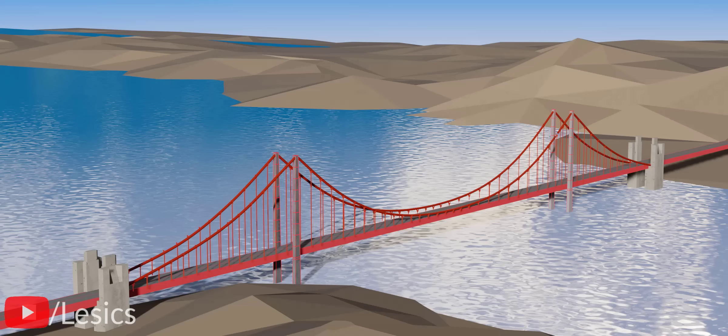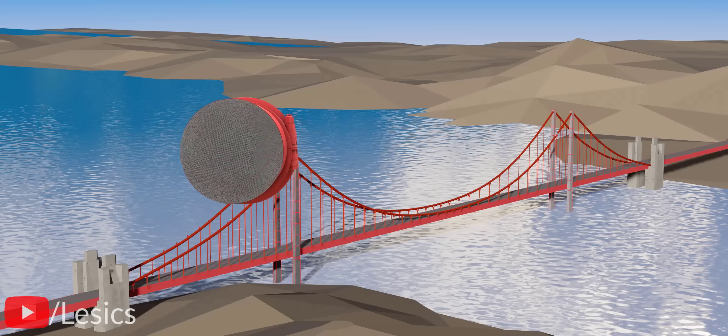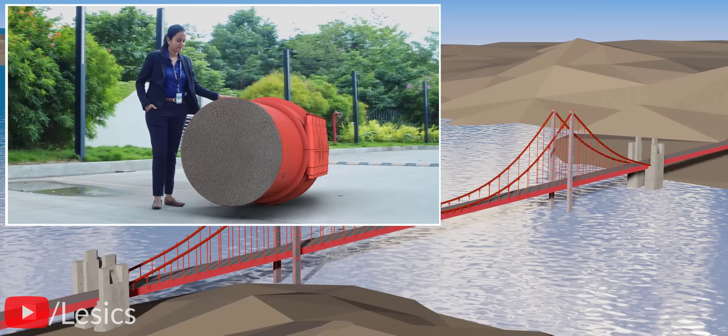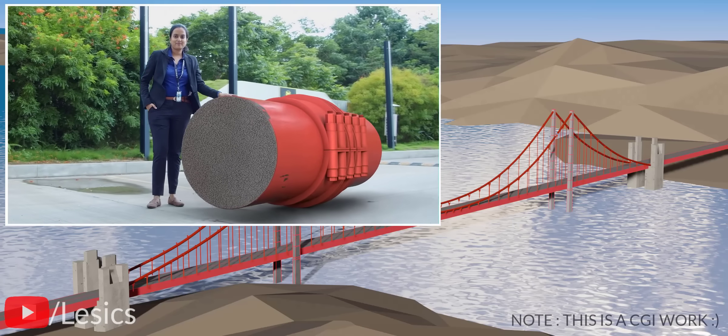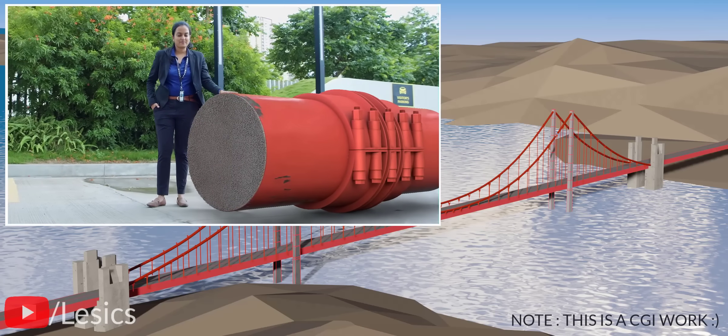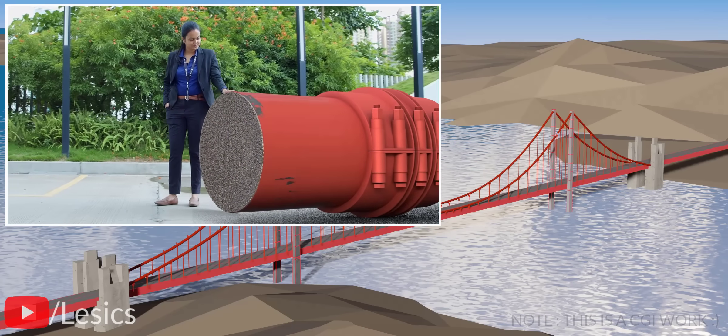This will obviously lead to a cable with less cross-section area. The width of the main cables are more than half the height of the average human. As a tourist attraction, a piece of this impressive main cable is demonstrated near the Golden Gate Bridge.